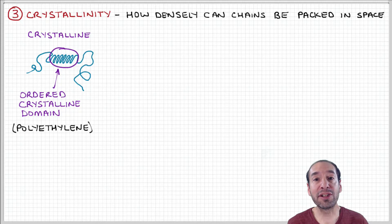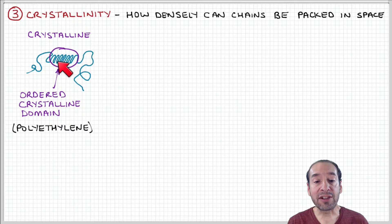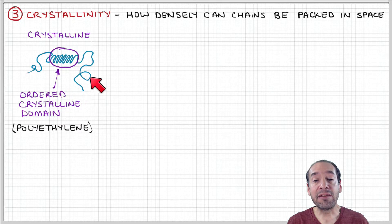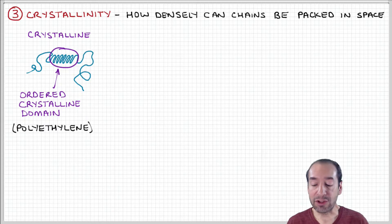For example, like crystalline silicon, you have silicon atoms arranged on a lattice. Here you have the polymer molecule folded in a way that creates some periodicity in the structure. This crystalline domain then gives the material special optical and mechanical properties associated with that structure.